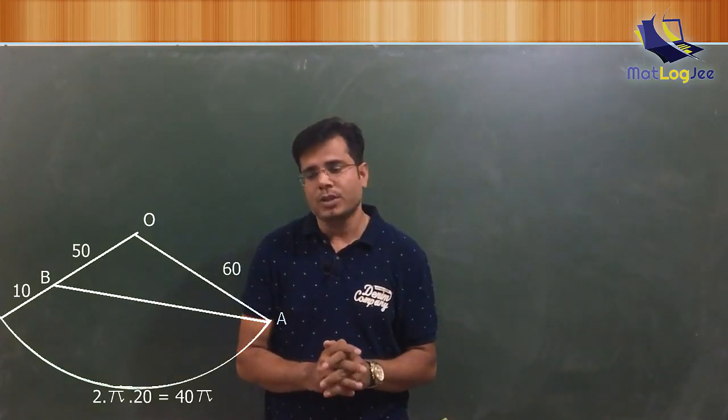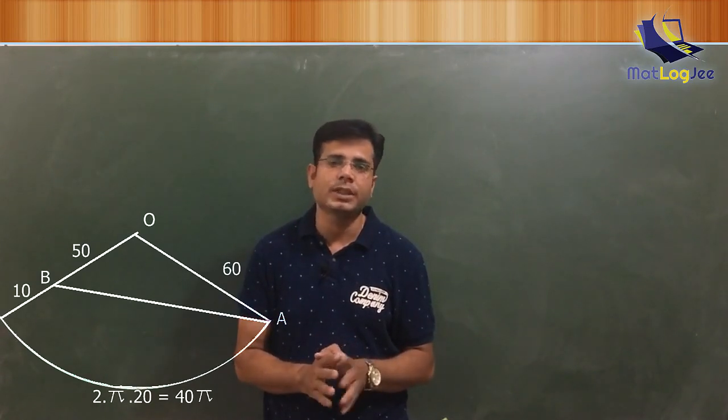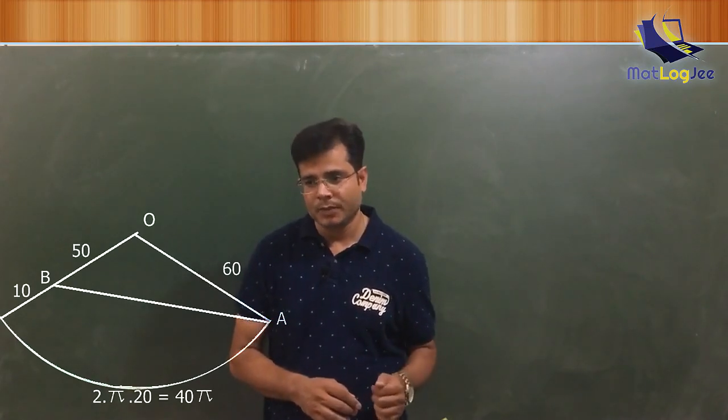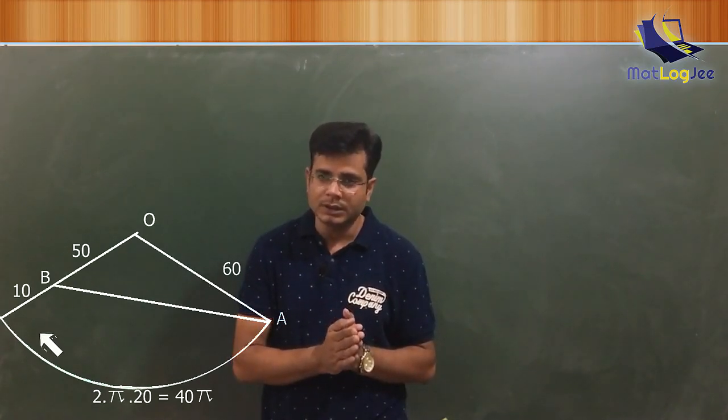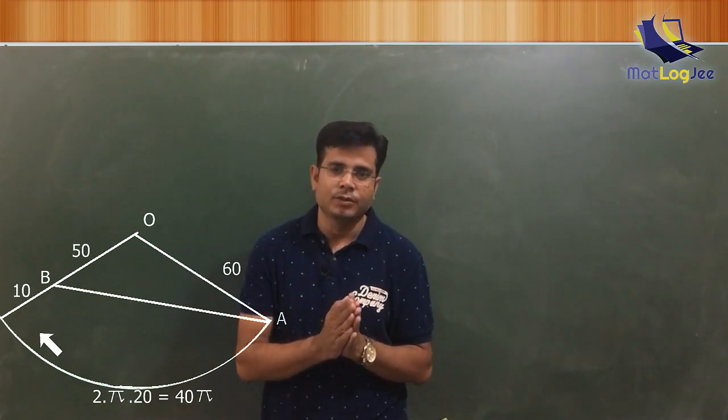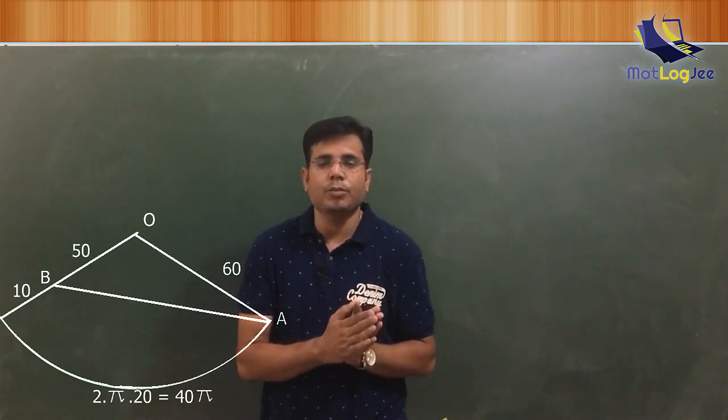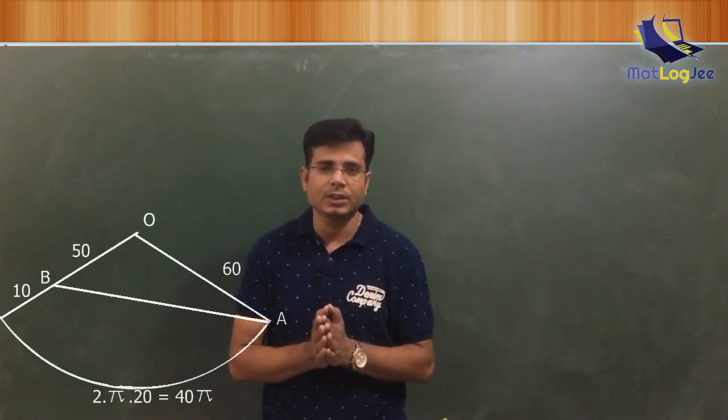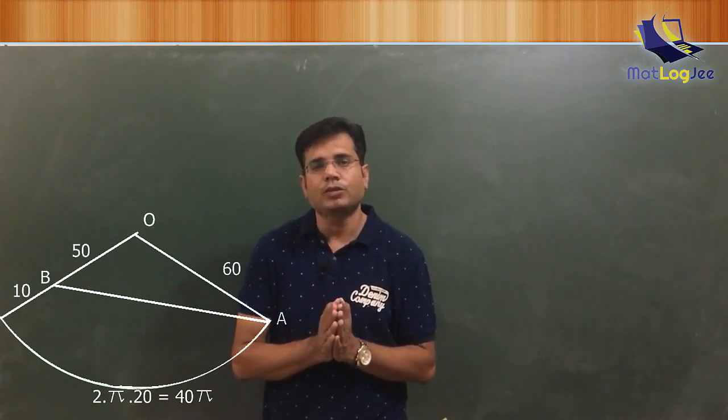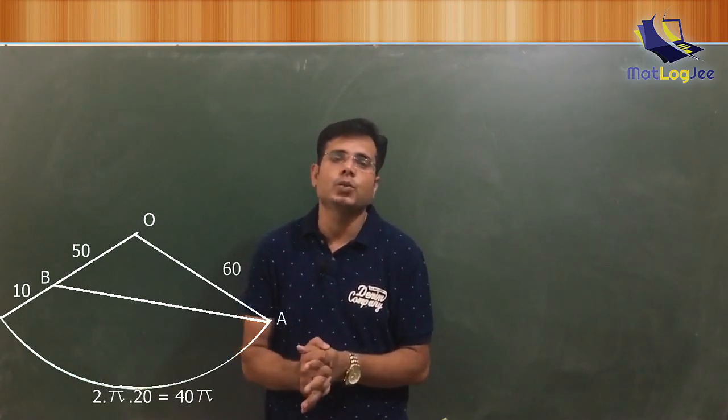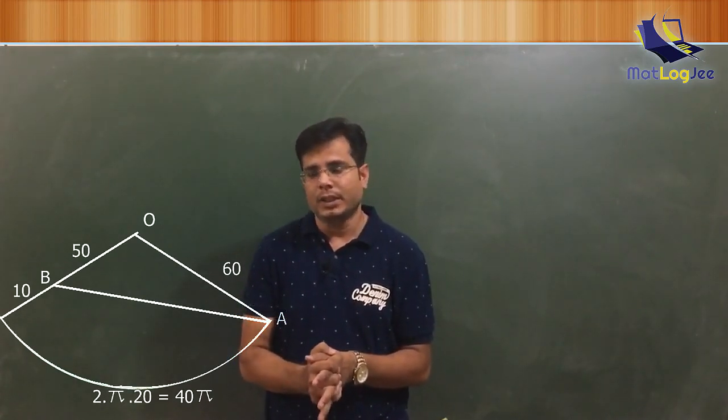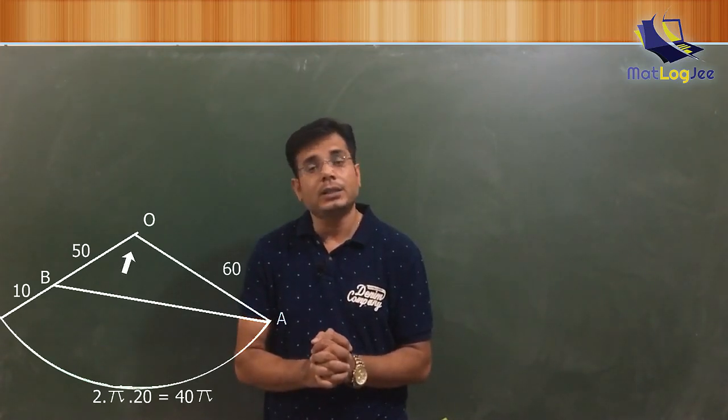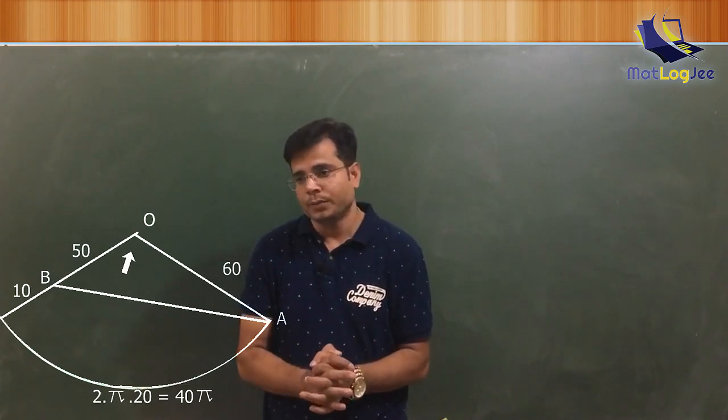Just observe the triangle formed by point A, B and the vertex of the cone. One side of this triangle is 60. The point B lies at a distance 10 from the circular arc, so the distance of point B from the vertex of the cone is 50. Now we know two sides 50 and 60 of this triangle and want to find the third side. That's why we require at least one angle of this triangle. So let me focus on the angle at vertex of the cone.